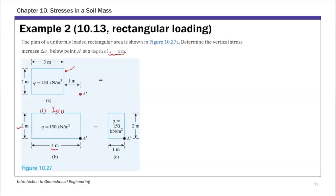We construct it such that point A prime is below the corner of this large rectangle. Comparing this larger rectangle with the original one, we added an extra 1 by 2 smaller rectangle, so we have to subtract these additional ones from the larger one. We'll call this Rectangle 2, with influence factor I3-2.